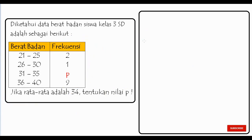Sekarang contoh yang kedua. Diketahui data berat badan siswa kelas 3 SD adalah sebagai berikut. Berat badan 21 sampai dengan 25, frekuensinya 2. 26 sampai 30, frekuensinya adalah 1. 31 sampai 35, frekuensinya P. 36 sampai dengan 40 banyaknya ada 9. Pertanyaannya, jika rata-rata adalah 34, tentukan nilai P-nya.